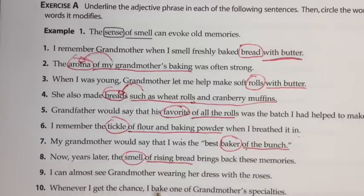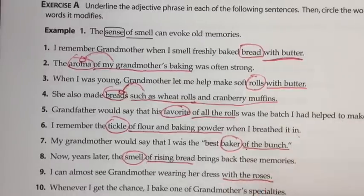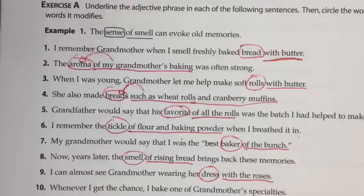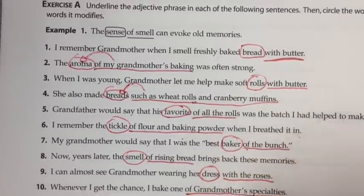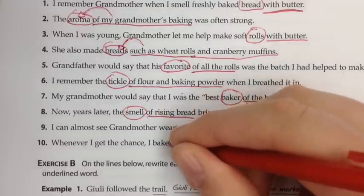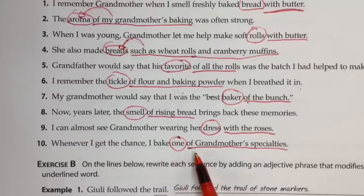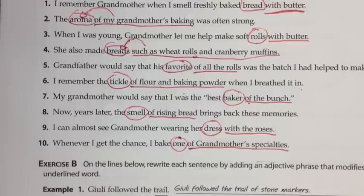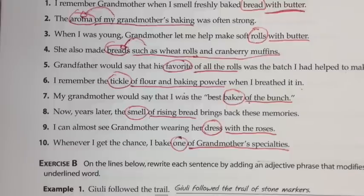Number nine: I can almost see grandmother wearing her dress with the roses. 'With' is a preposition, 'the roses' is our object, and they describe the dress. Number ten: whenever I get the chance, I bake one — one of grandmother's specialties. 'Of' is a preposition, and 'grandmother's specialties' is our object; they both describe 'one.' So the pattern with the adjective phrase is a preposition and then an object of that preposition. Go ahead and finish the bottom half of the exercise, and then we're going to look at the adverb phrase.